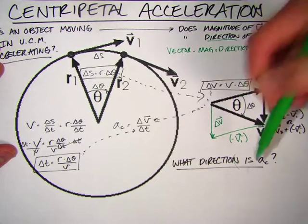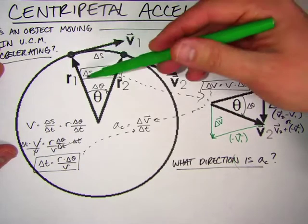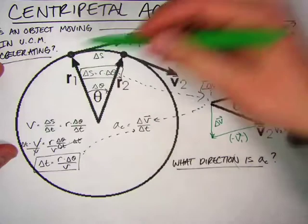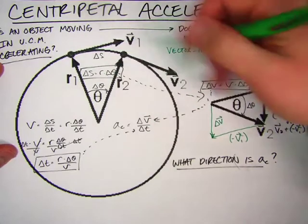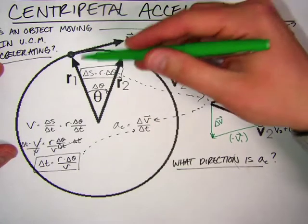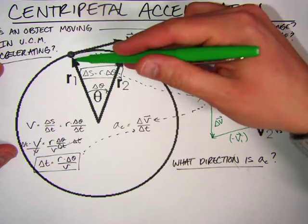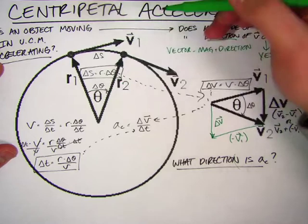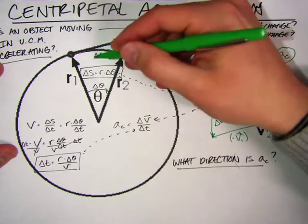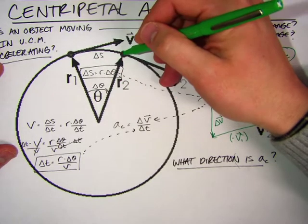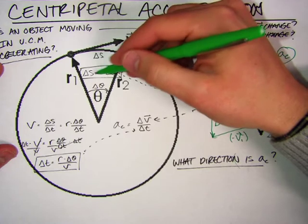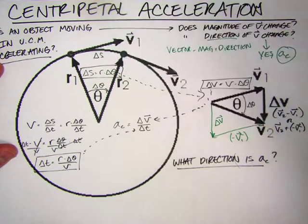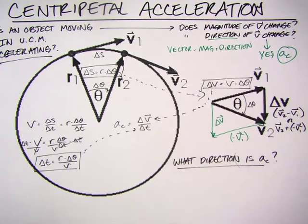So how do we find the relationship for AC? If we look at something in UCM, now this happens to be rotating clockwise, but it doesn't matter. It could be counterclockwise. But if we look at how the position changes from time one to time two over this delta theta, we know that the arc length traveled from here to here is equal to the radius, which doesn't change, times delta theta. So that comes from the geometry of a circle.